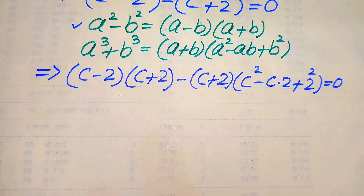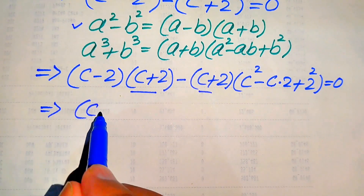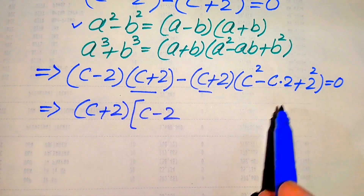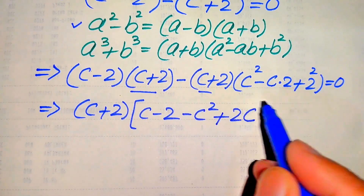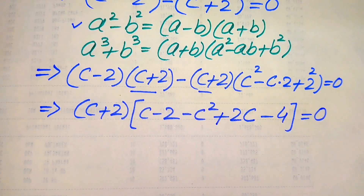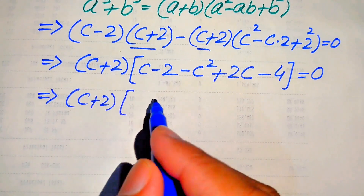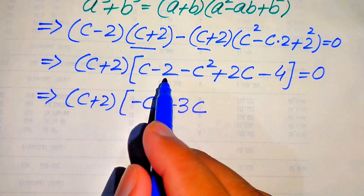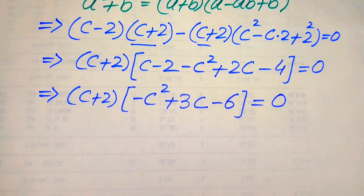From both terms we have (c plus 2) as a common factor. Taking (c plus 2) common, the remaining values are: (c plus 2) times [(c minus 2) plus (−c squared plus 2c minus 4)] equals 0. Distributing the negative sign and combining like terms gives (c plus 2)(−c squared plus 3c minus 6) equals 0.